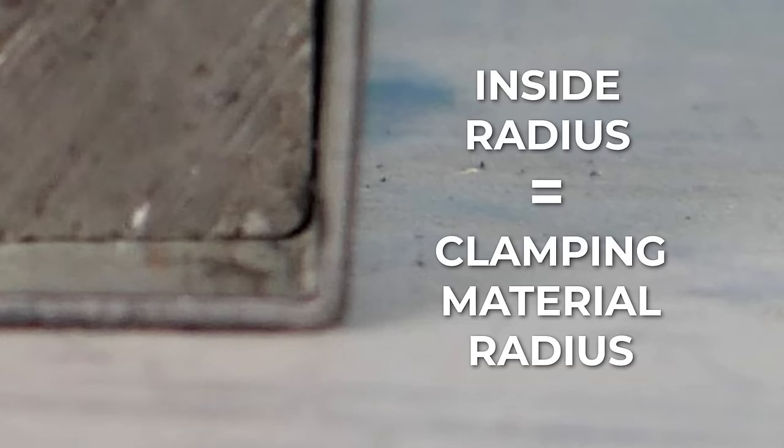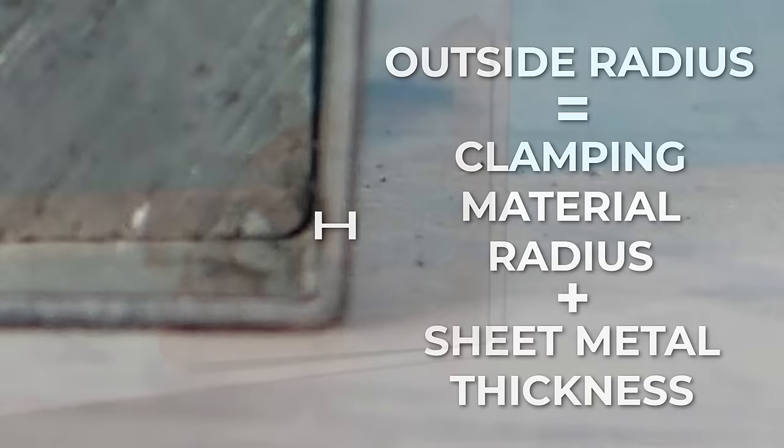The inner radius of the bend is dependent on the radius of the clamping material. And the outside radius is equal to the clamping material plus the thickness of the sheet metal being bent. So a piece of angled steel with a sharp edge is ideal for a 90 degree bend.